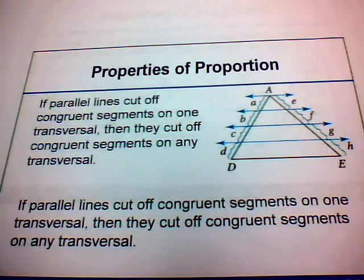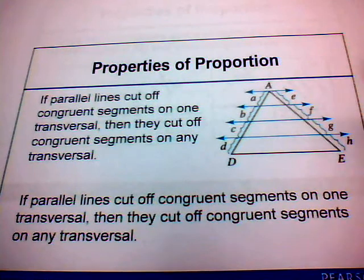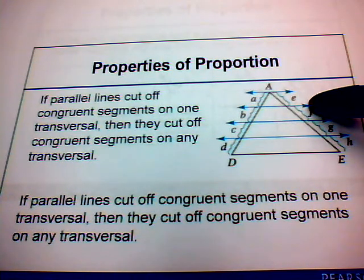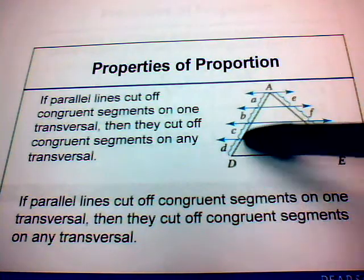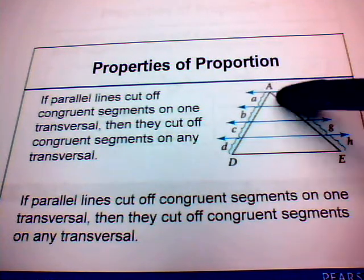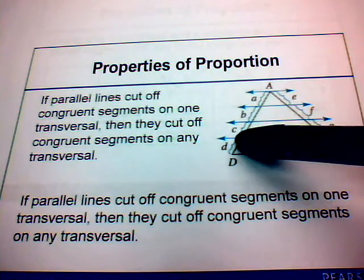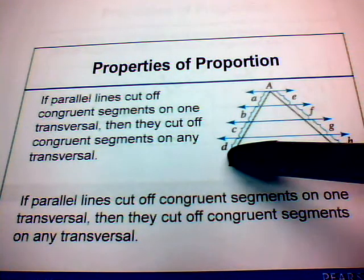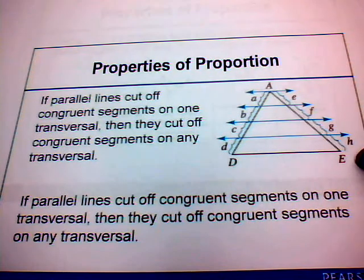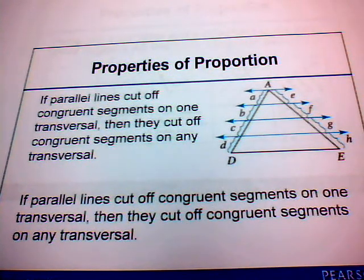If parallel lines cut off congruent segments on one transversal, then they cut off congruent segments on any transversal. For example, if parallel lines cut off congruent segments A, B, C, D on transversal AD, then they will also cut off congruent segments E, F, G, H on another transversal such as AE.